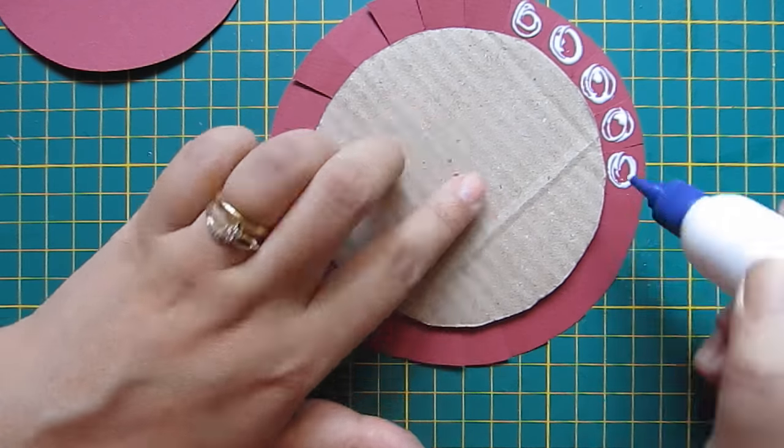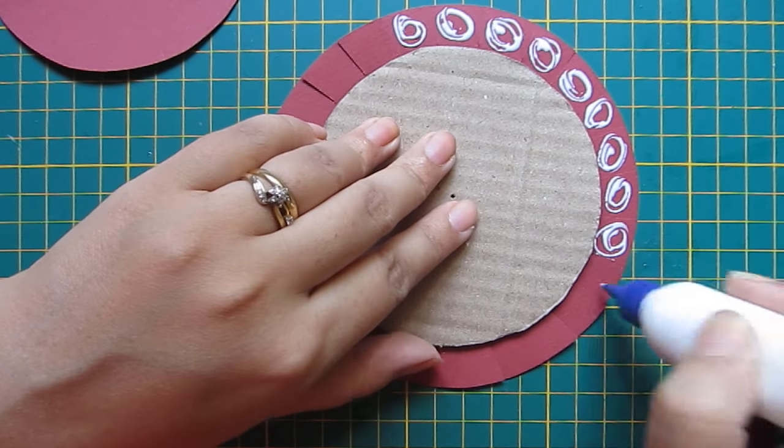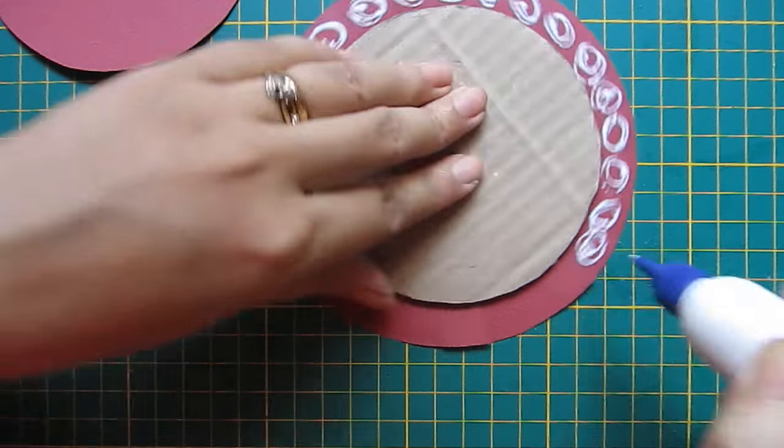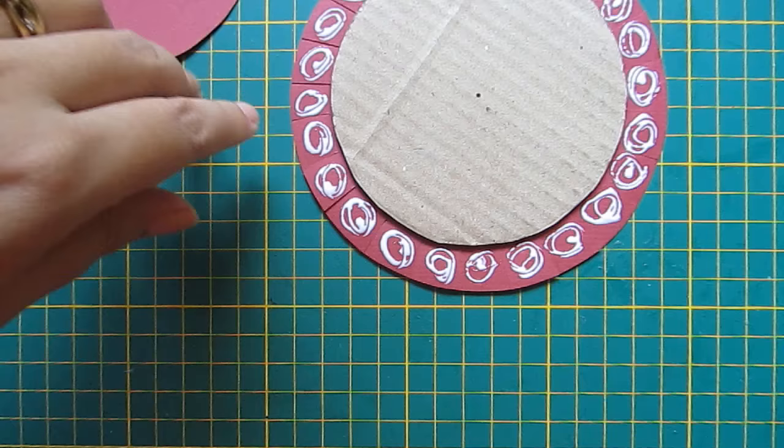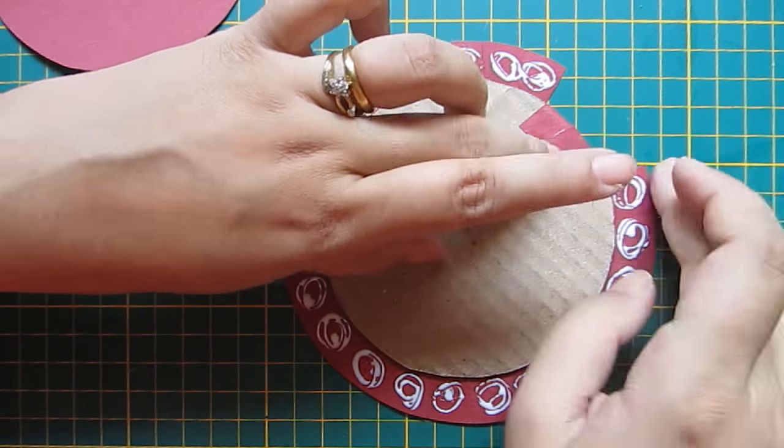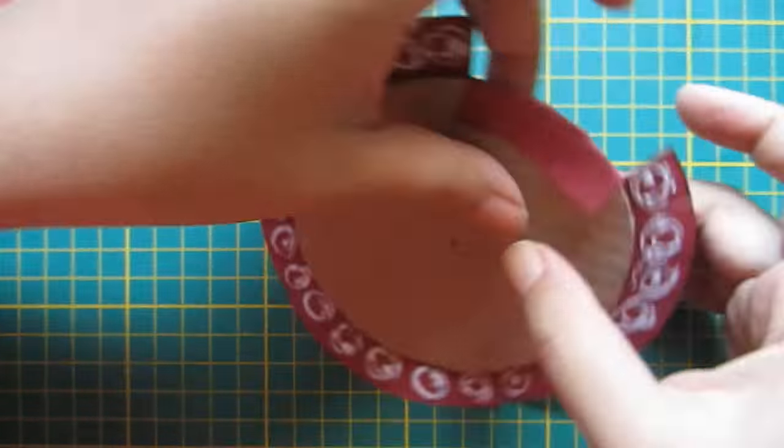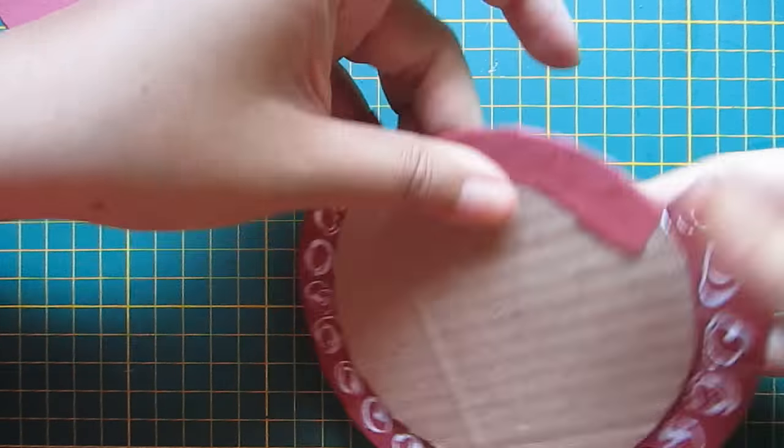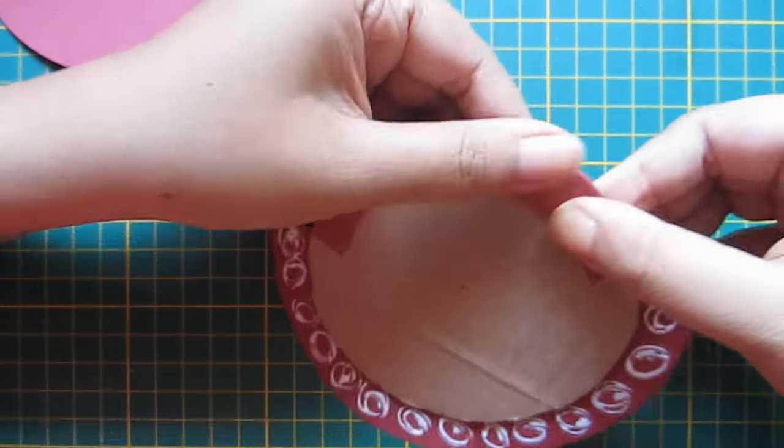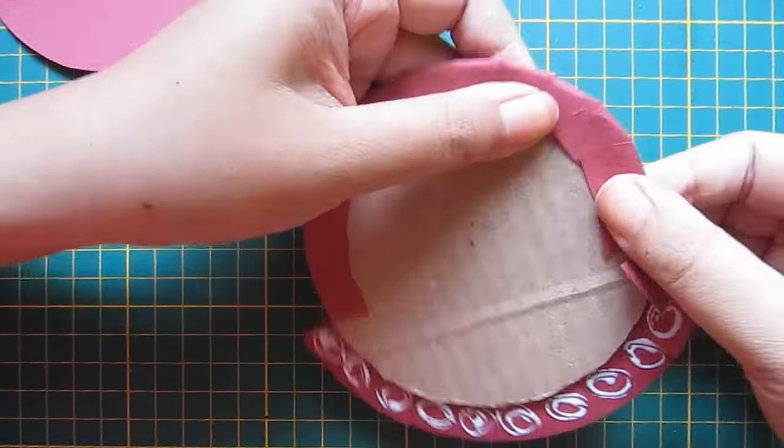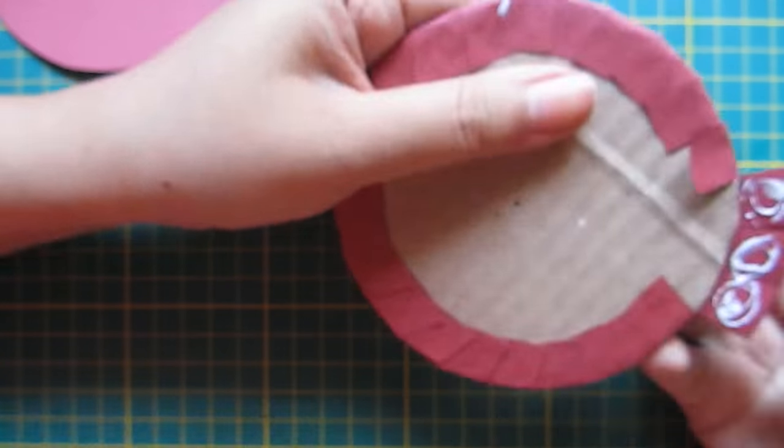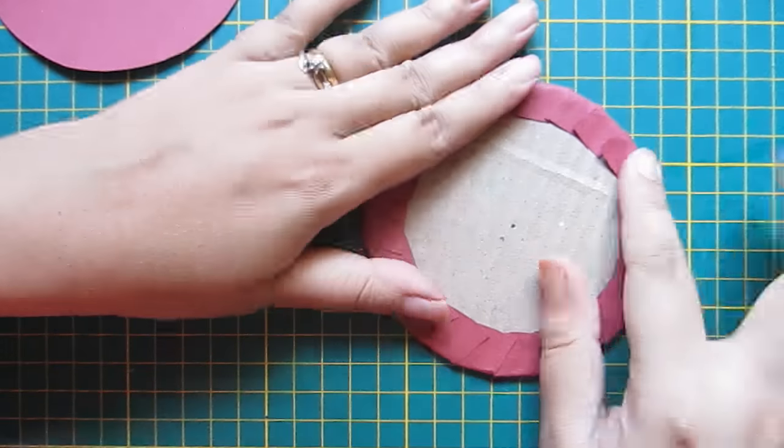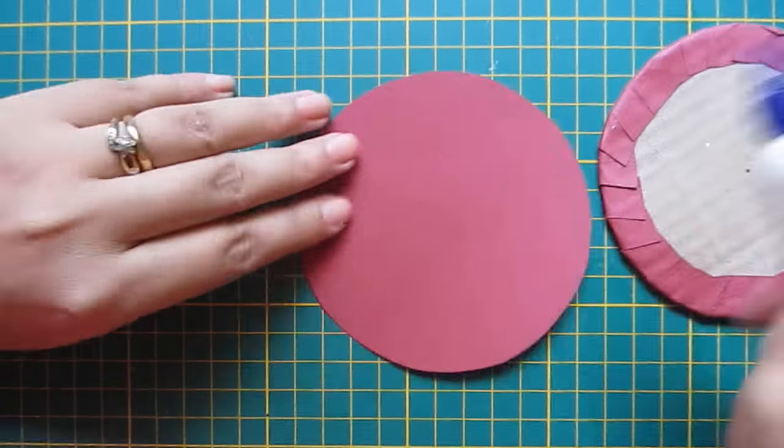Then add glue on the edges and fold like this. Now we will add another circle on it.